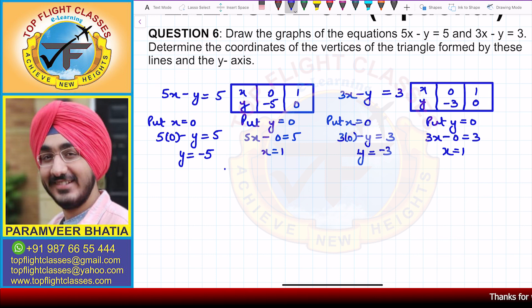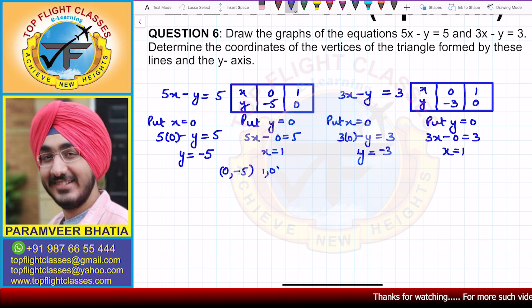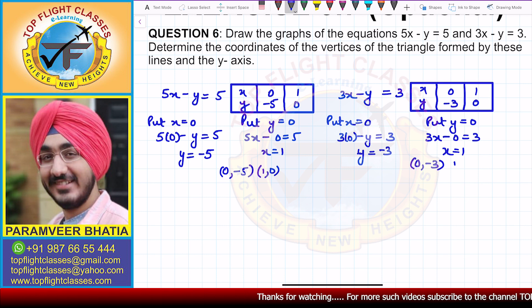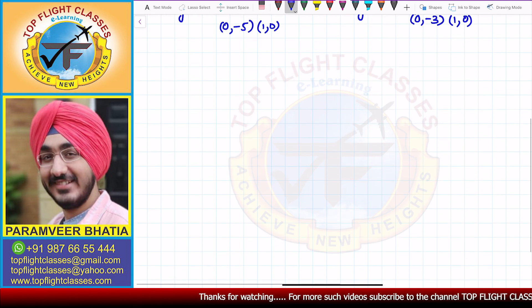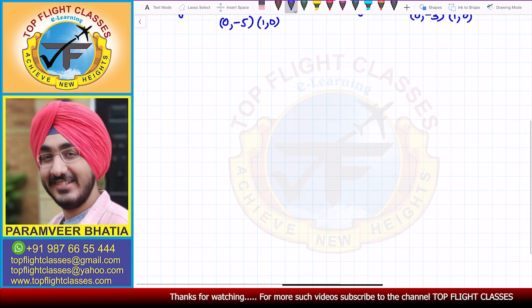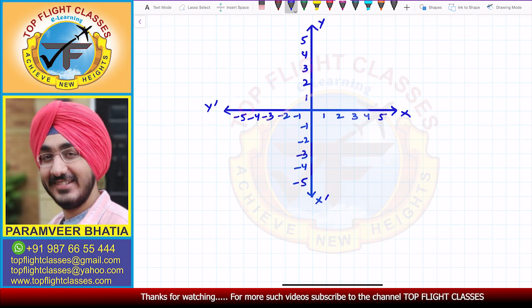From the first equation I have two points: (0, -5) and (1, 0). From the second equation I have two points: (0, -3) and (1, 0). Now let us draw the graph.